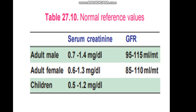The reference values of creatinine in plasma are: adult male 0.7 to 1.4 mg/dL, adult female 0.6 to 1.3 mg/dL, and children 0.5 to 1.2 mg/dL. The GFR comes to be 95 to 115 ml per minute in adult males, and 85 to 110 ml per minute in adult females.